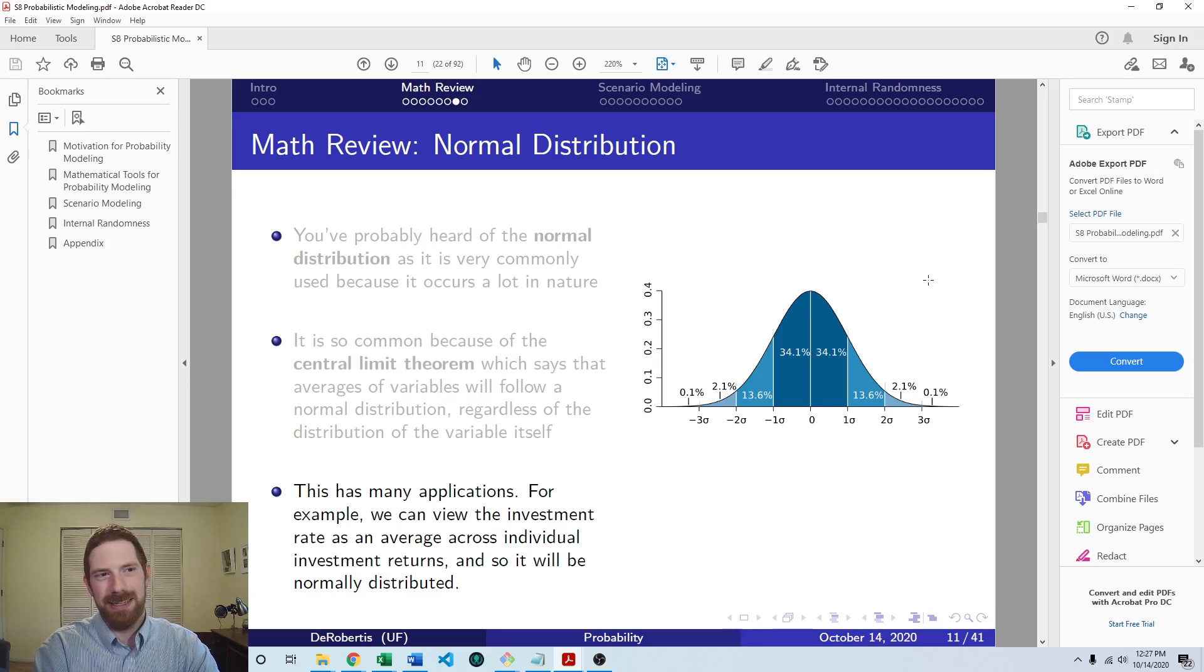So kind of the outcome from that is that the majority of the time we can use a normal distribution, and it's going to be a good choice of distribution or whatever random variable that we're looking at, because most variables can be thought of an aggregation of more individual random variables. So if you're not sure what distribution to pick, just pick the normal distribution, and most of the time that's going to be a reasonable assumption.